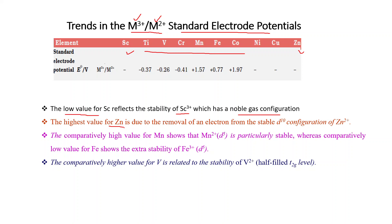If there is a high value, then M2+ is more stable. The highest value — which can be predicted for zinc — is due to the removal of an electron from the stable d¹⁰ configuration of Zn2+. The comparatively high value for Mn indicates that Mn2+ is more stable, because Mn2+ has a d⁵ configuration.